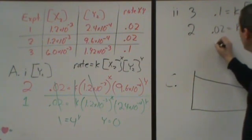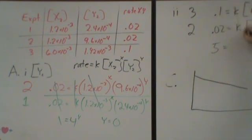So again, I'm going to divide these two. 0.1 divided by 0.02 is 5. k is canceled. And then 6 divided by 1.2 is going to be 5. So in this case, I have 5 raised to the x power is equal to 5. x must be 1.